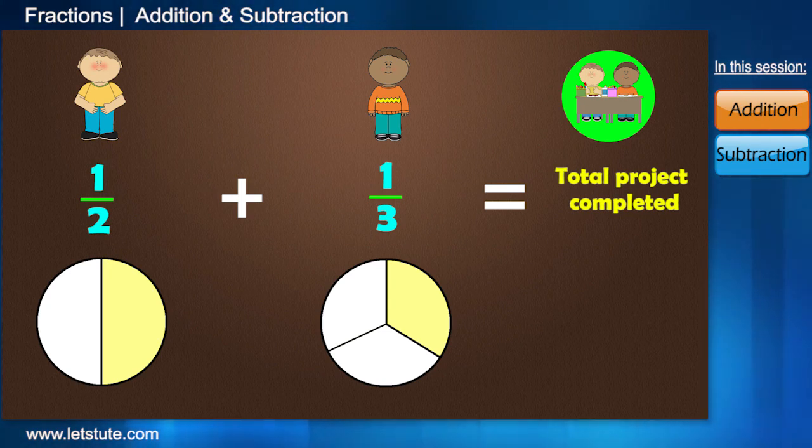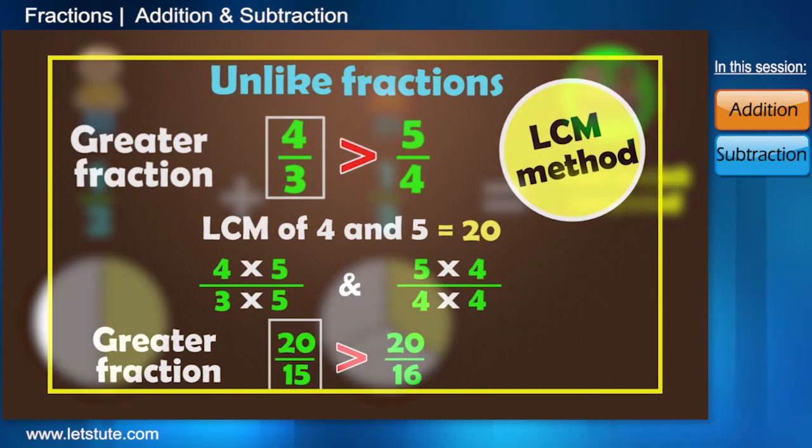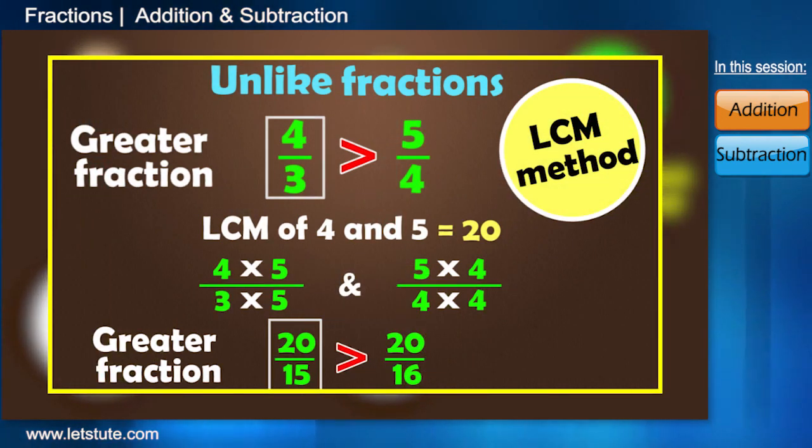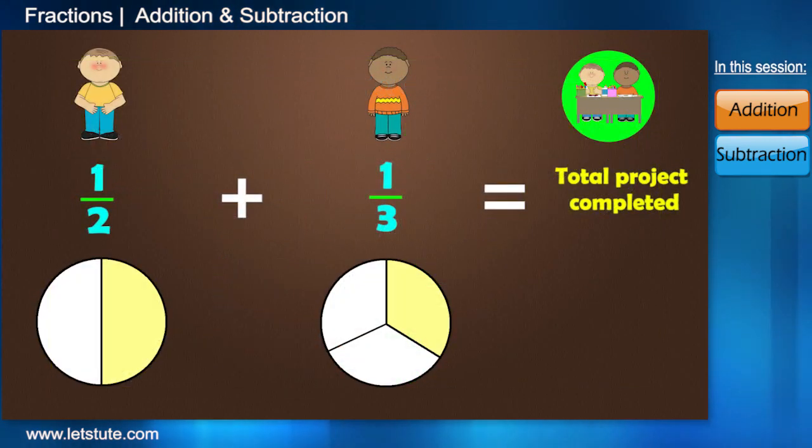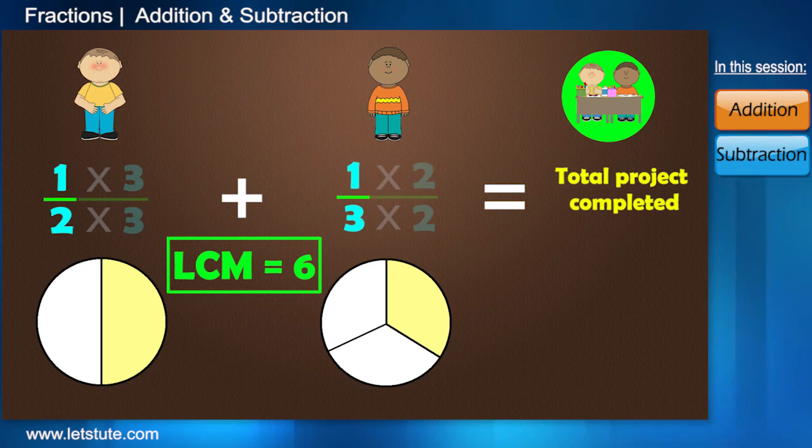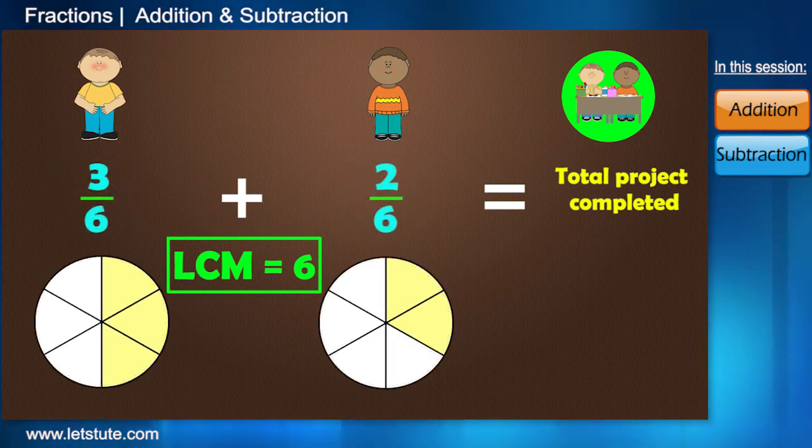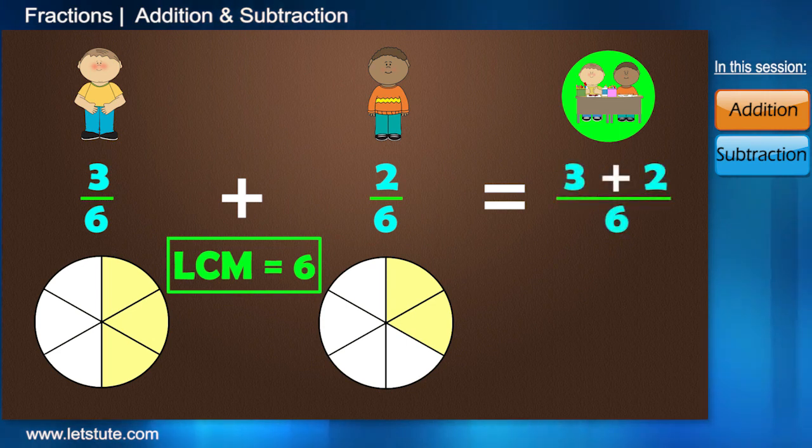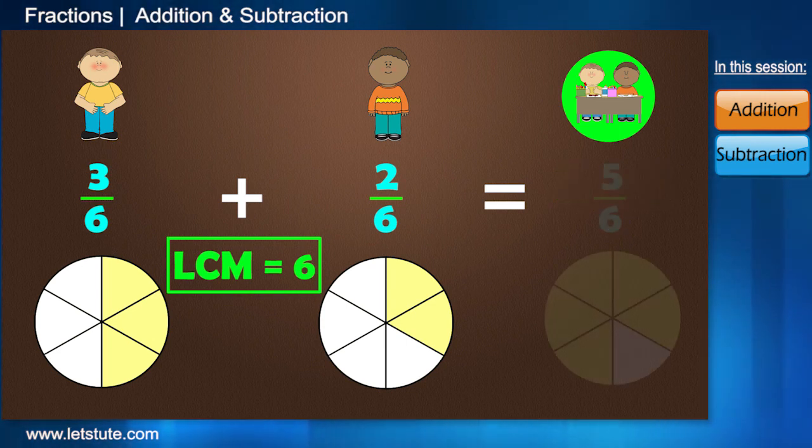In our previous session, we learnt that how we can make the two denominators same by taking LCM. So, for 3 and 2, the LCM is 6. And now, we can calculate the total project completed which is 5 by 6.